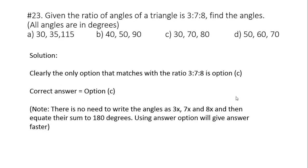Question number 23. Given the ratio of angles of a triangle is 3 is to 7 is to 8. Find the angles. All the angles are in degrees. So option number A is 30, 35, 115. B 40, 50, 90. C 30, 70, 80. D 50, 60, 70. Now there is no need to assume the angles as 3x, 7x, 8x and then write 3x plus 7x plus 8x is equal to 180. Clearly you can check the answer option. Only option C matches with the ratio 3 is to 7 is to 8. So clearly the answer will be option C.